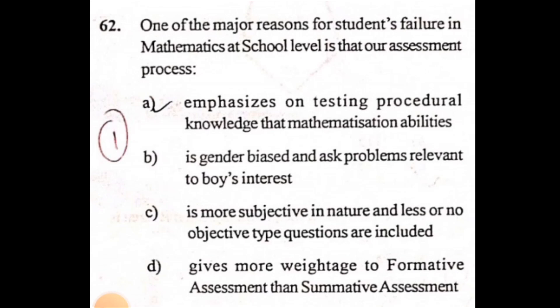Option C: is more subjective in nature and less or no objective type questions are included — this is also wrong. Option D: gives more weightage to formative assessment — this is also wrong. So the correct option is option A: emphasizes testing procedural knowledge rather than mathematical abilities.